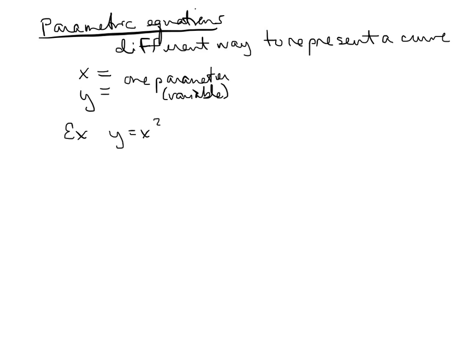Here's an example: y equals x squared. We could rewrite this as x equals t and y equals t squared, where t is everything. If I plug in t equals x into there, I get y equals x squared. So this is just a different way to represent a curve.